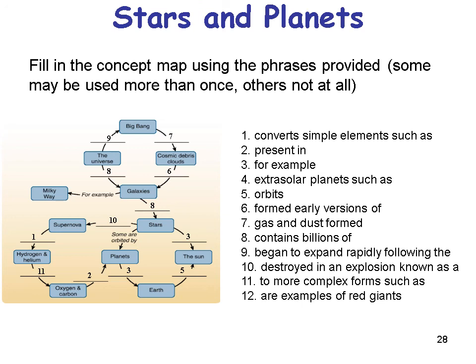In the Big Bang, gas and dust formed cosmic debris and clouds, which formed early versions of galaxies. The universe began to expand rapidly following the Big Bang and also contains billions of galaxies. Galaxies contain billions of stars, and stars are destroyed in explosions known as supernovae. This is how these different entities relate to each other using a concept map.